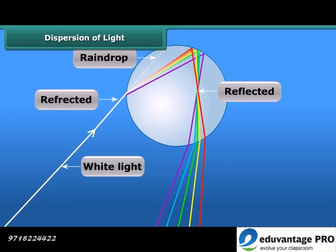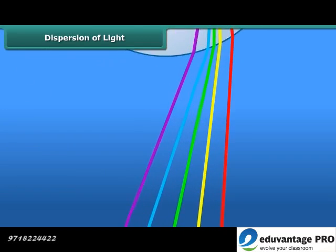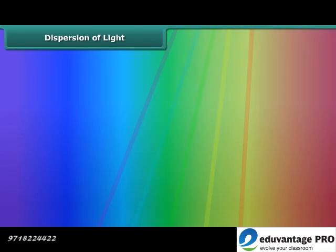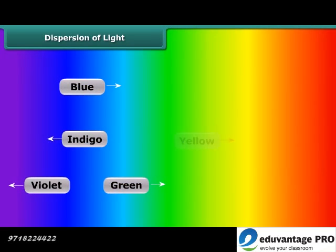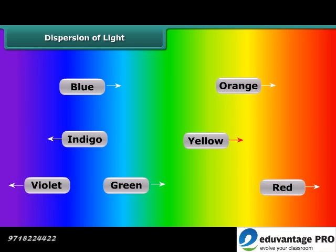The colors of the spectrum can be seen in the following order: violet, indigo, blue, green, yellow, orange, and red — remembered by the acronym VIBGYOR.